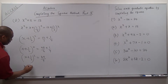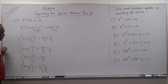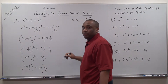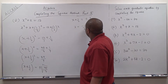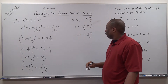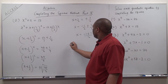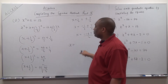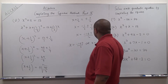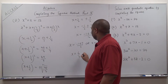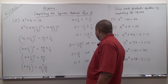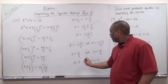So x plus 1 half is equal to plus or minus square root of 49 over 4, which simplifies to plus or minus square root of 49 over 2, which is plus or minus 7 over 2. So x equals negative 1 half plus or minus 7 over 2. Since the LCD is 2, this is negative 1 plus 7 over 2, or negative 1 minus 7 over 2. So x will be 6 over 2 or negative 8 over 2. Therefore x equals 3 or x equals negative 4.